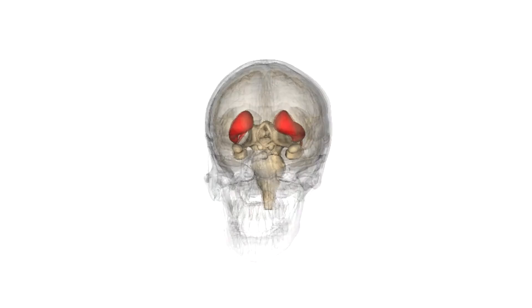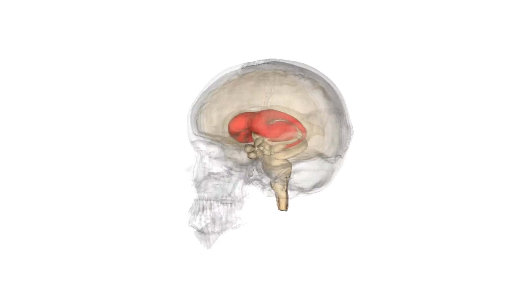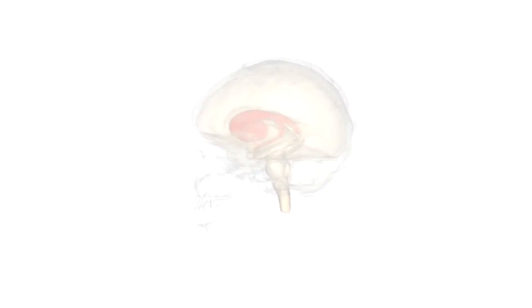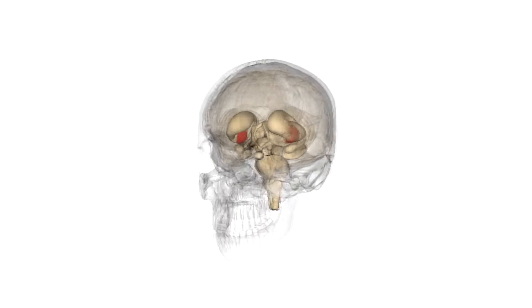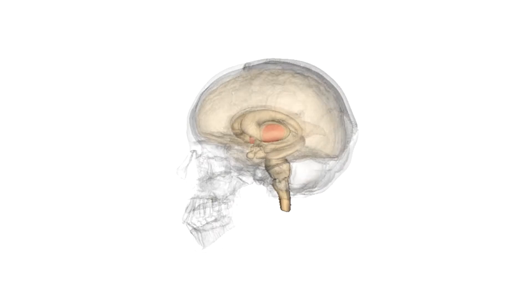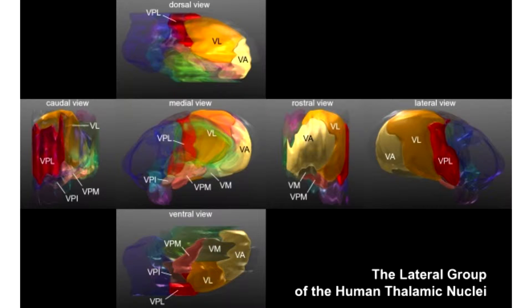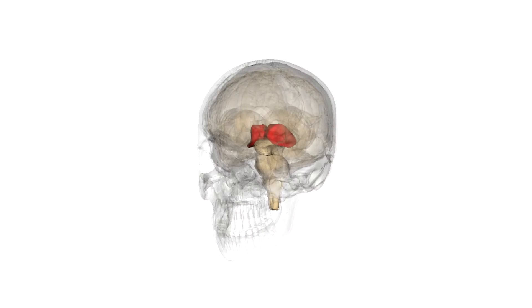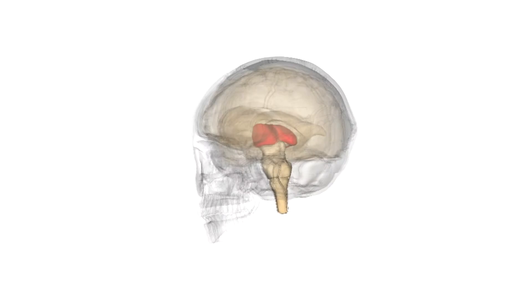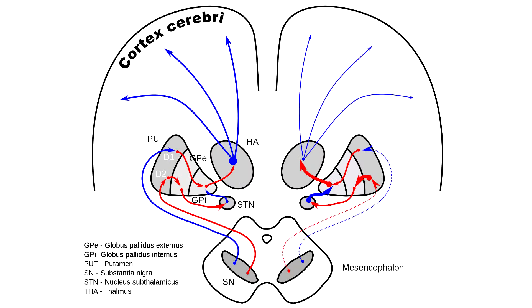The striatum functions as input, whereas the pallidum functions as output. The thalamus works as output and relay structures. The substantia nigra pars compacta and the subthalamic nucleus work as modulatory components.